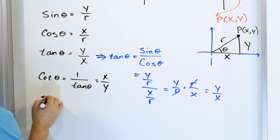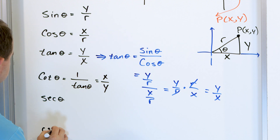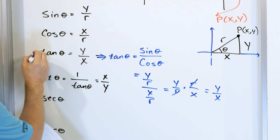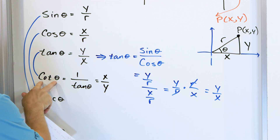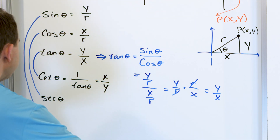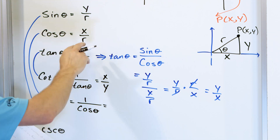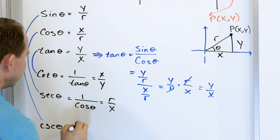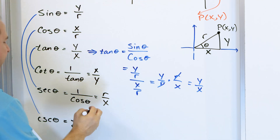In addition to the cotangent, we have the secant and the cosecant. The cotangent of theta is 1 over the tangent of theta. When you do 1 over Y/X and flip it and multiply, it ends up becoming X over Y. Secant is 1 over cosine of theta. Cosine is X over R, so when we flip that over, we get R over X. And cosecant is 1 over sine of theta. Sine is Y over R, so we get R over Y.